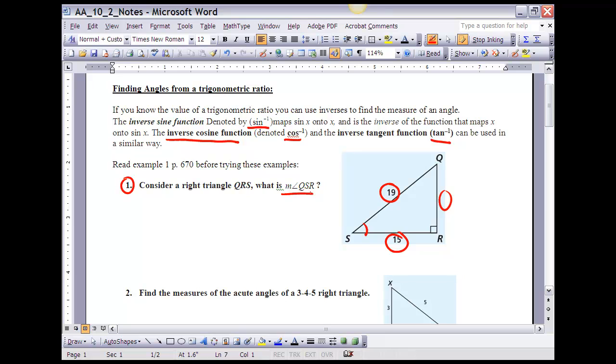Here's what I'm going to do, is I'm going to say, well, the cosine of that angle, and I'm just going to call that angle theta, is equal to the adjacent over the hypotenuse, or 15 over 19. So, if the cosine of theta is equal to 15 over 19, what I'm going to do to get theta by itself is I'm going to take the inverse cosine.